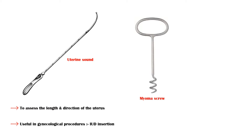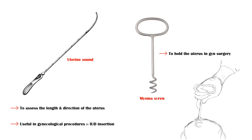Myoma screw is used to hold the uterus during gynecological surgeries, such as abdominal and laparoscopic hysterectomy and myomectomy. This image shows a surgeon holding the uterus using a myoma screw.